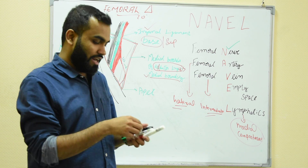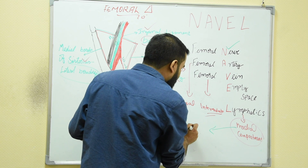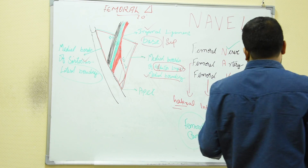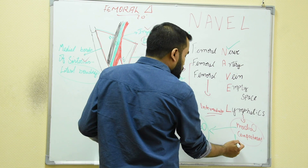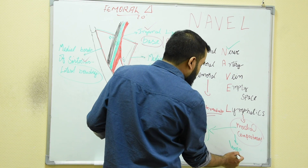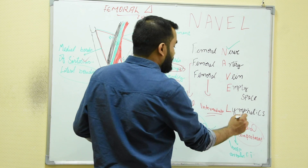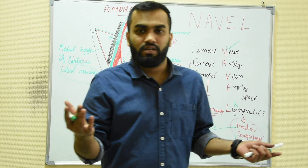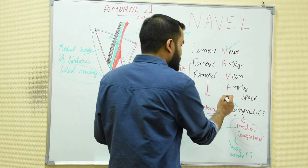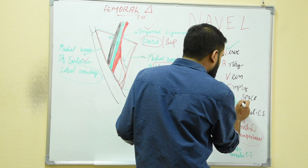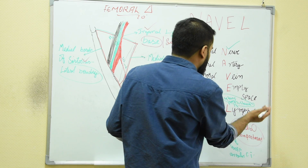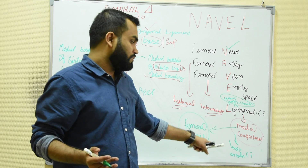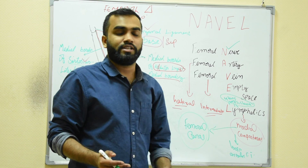The medial compartment is also called the femoral canal. The femoral canal contains lymphatics and some loose areolar connective tissue. The lymphatics drain from the lymph nodes — from the glans penis in males and the clitoris in females — and they drain through here into the medial compartment, which is the femoral canal.